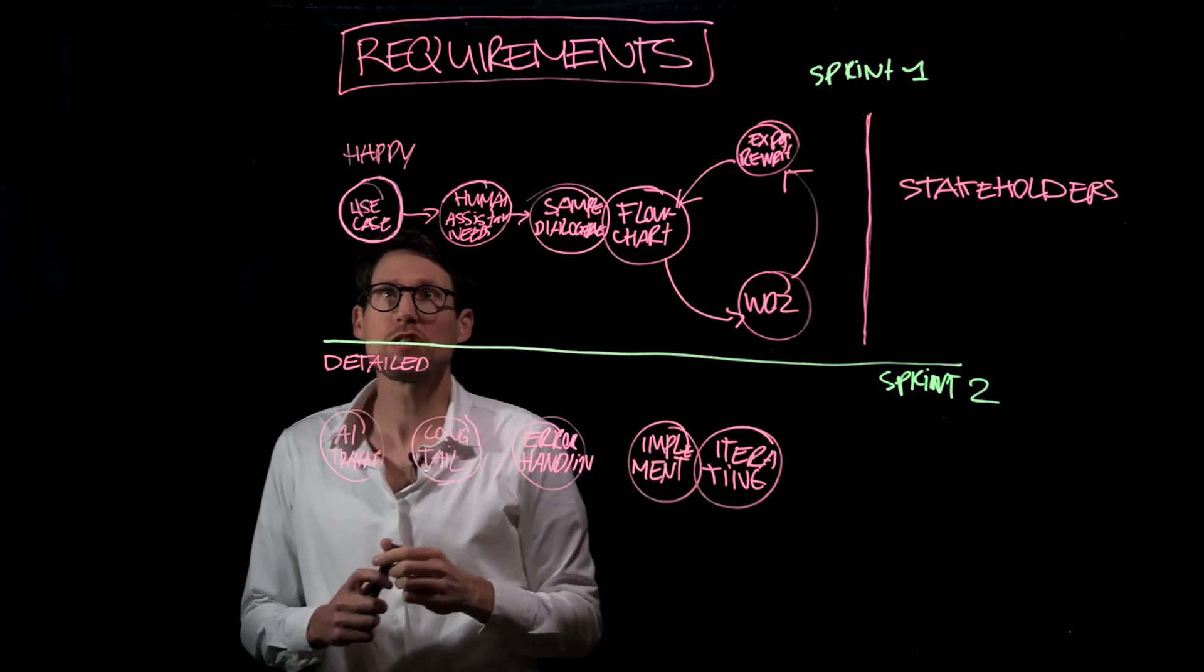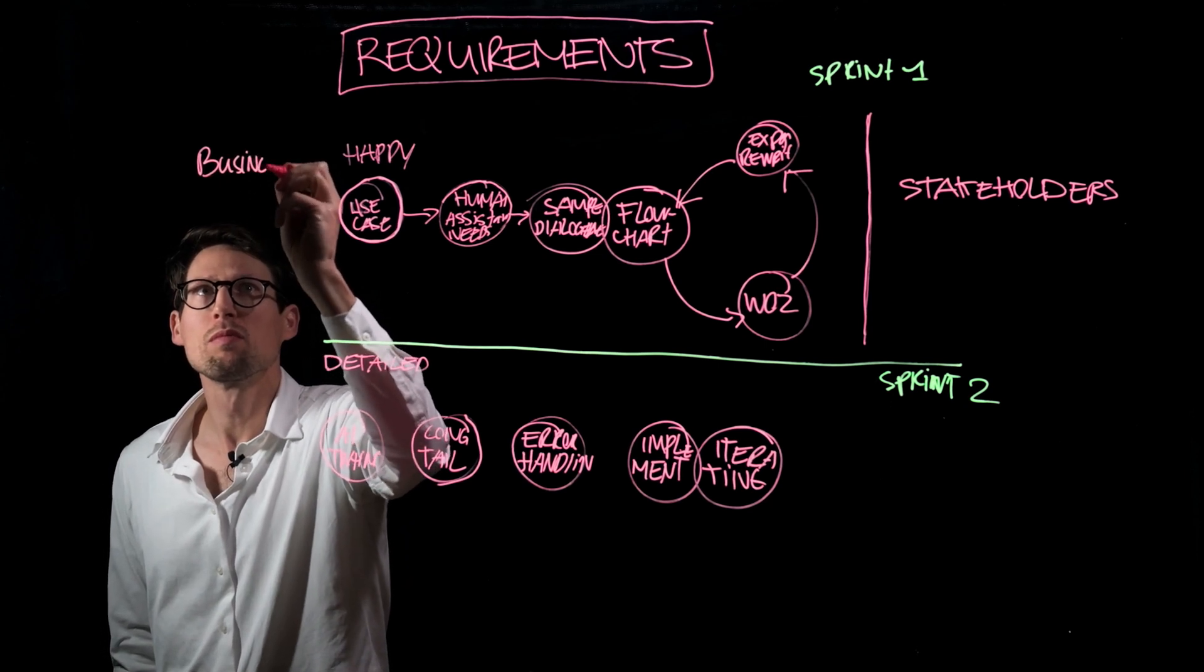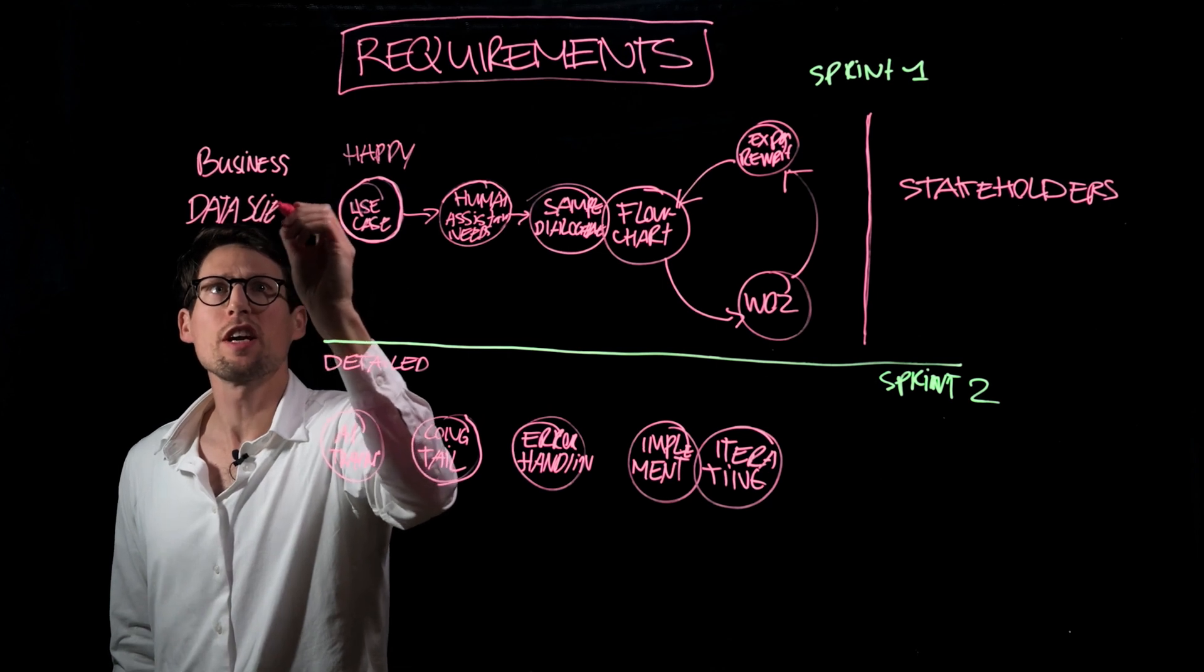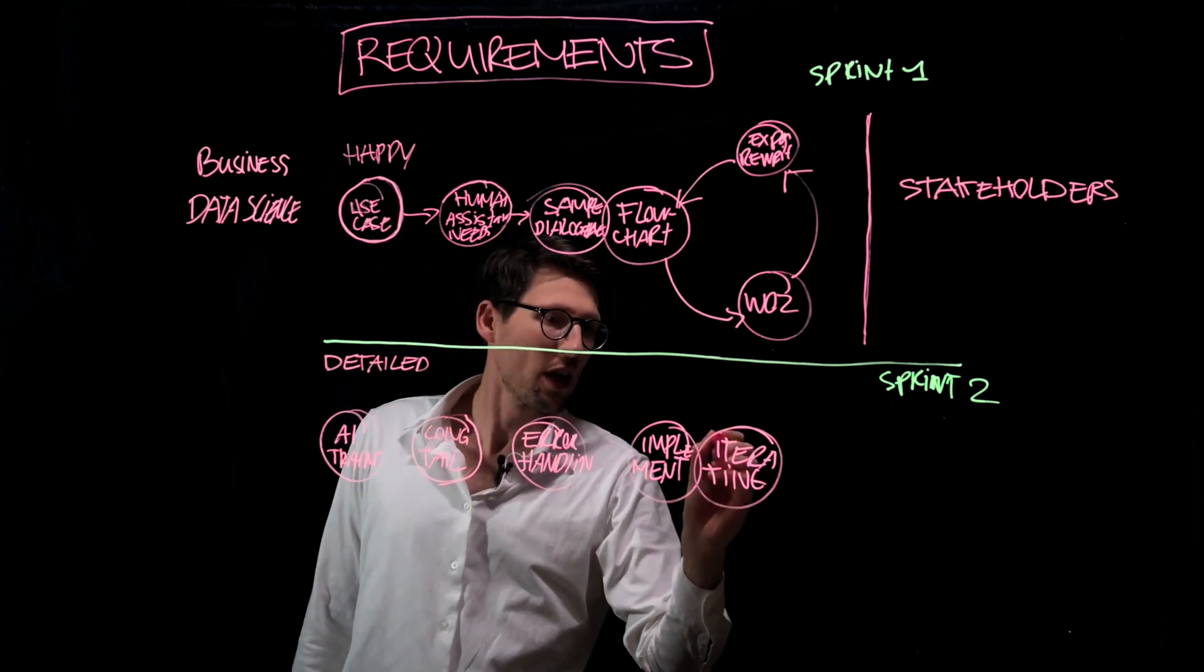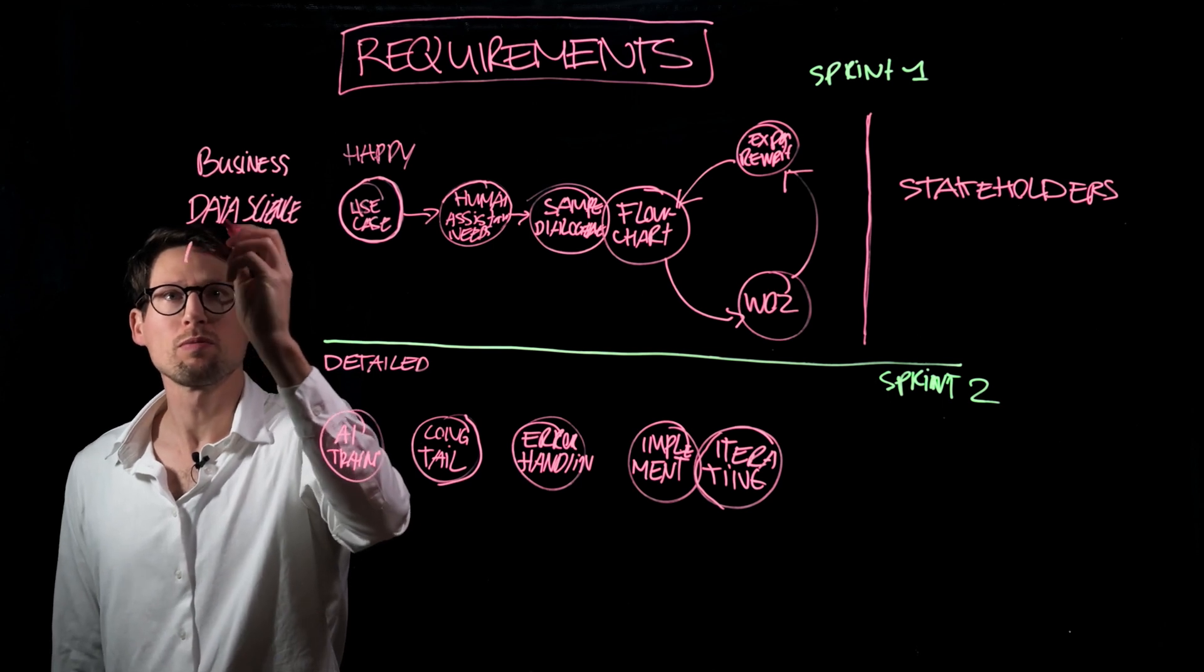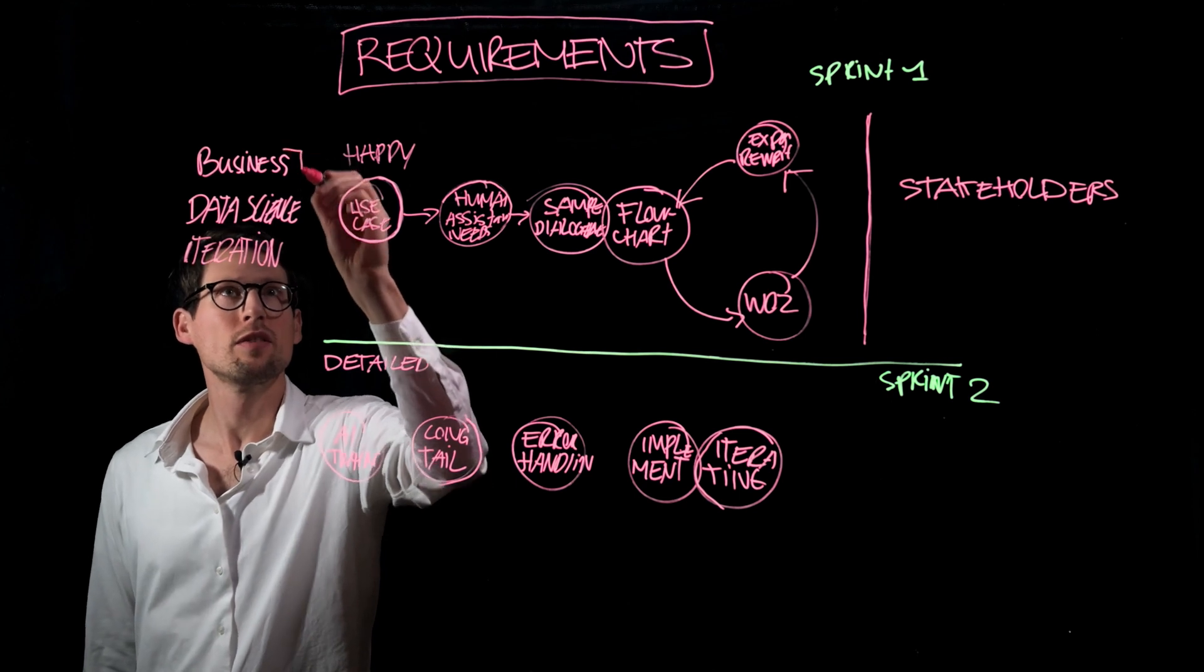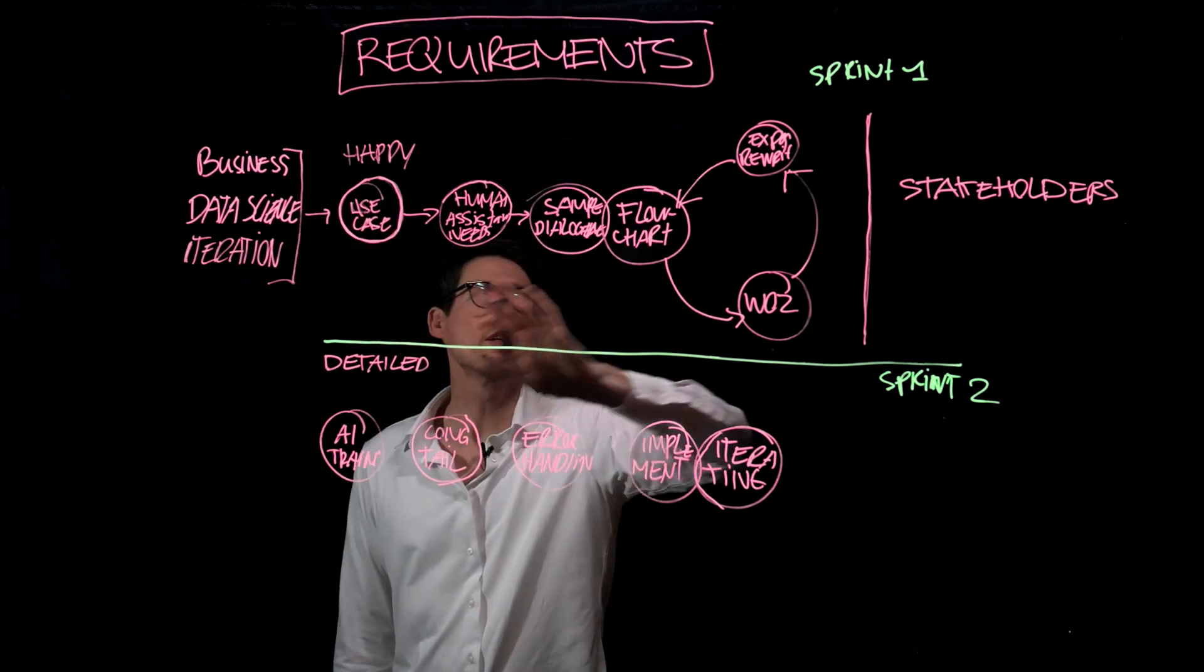And again, where do these use cases come from? Well, they come from the business, or they come from data science, people that just look at all the data in the organization, and they find use cases, or they actually come from the AI training that is doing the iteration. And together, these three things usually create use cases that are on the backlog and go into that first sprint.